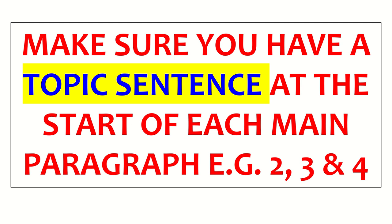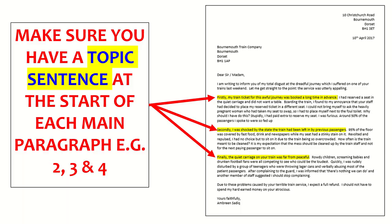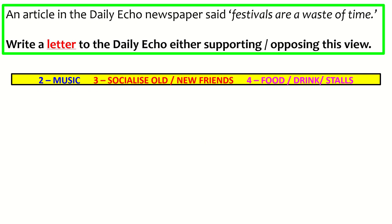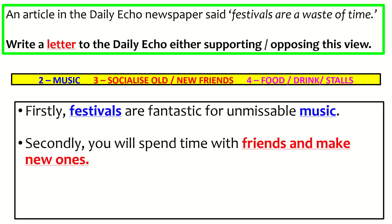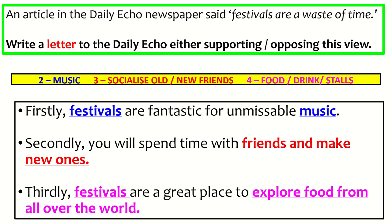Make sure you have a topic sentence at the start of each main paragraph — short and simple, almost like a title that tells the reader what the paragraph is going to be about. If my central points are music, friends, and food and drink, examples of good topic sentences are: 'Firstly, festivals are fantastic for music.' 'Secondly, you will spend time with friends and make new ones.' 'Thirdly, festivals are a great place to explore food from all over the world.' Make it very clear to the examiner what you're going to be talking about.